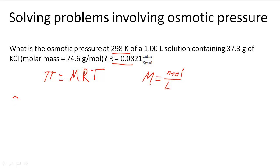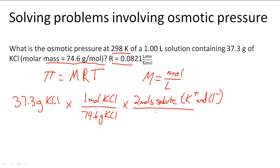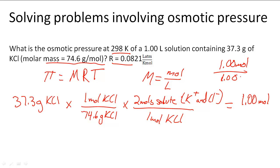To figure out the moles, I'm going to convert 37.3 grams of KCl to moles. We do 1 mole of KCl divided by 74.6 grams of KCl from the molar mass, and we also multiply by 2 moles of solute per mole of KCl, which gives us 1.00 moles. So now we do 1.00 mole divided by 1.00 liters, and that gives us 1.00 molar.